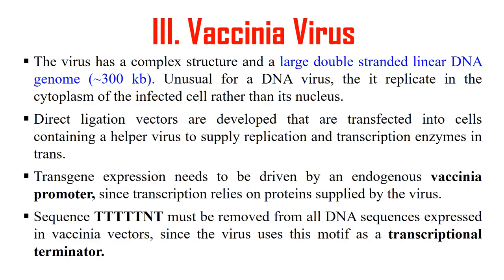Next, vaccinia virus. These viruses also have a double-stranded linear DNA of about 3 KB genome size, and transgene expression is driven by the vaccinia promoter. Generally, the sequence double-T-double-T-TNT is removed from all sequences because this sequence acts as a transcriptional terminator — it will terminate transcription. So this sequence must be removed before transfection. There must be a vaccinia promoter and the TNT sequence must be removed to use this virus as a transfection viral vector.